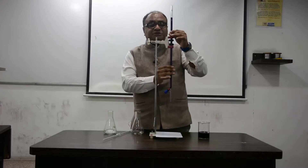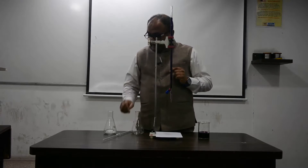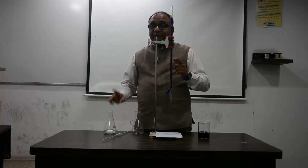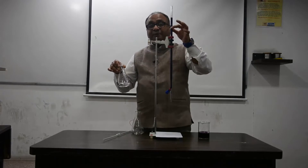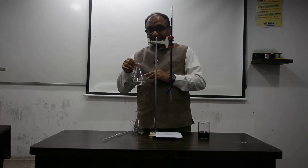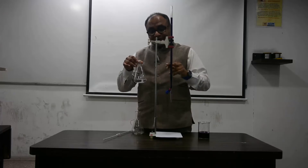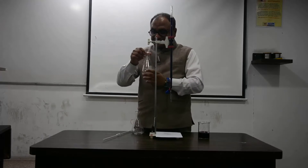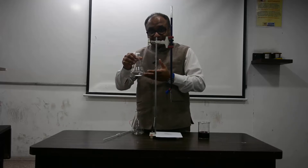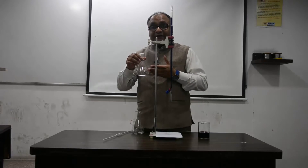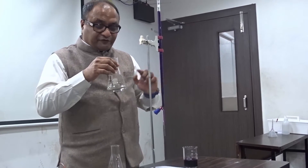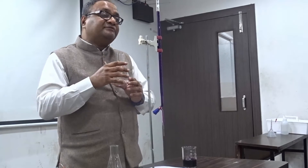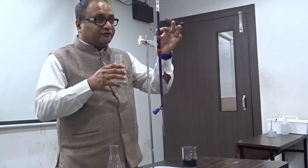I am going to do a simple titration between ferrous ammonium sulfate and KMnO4. The ferrous ammonium sulfate is colorless and KMnO4 is a deep purple. The product of KMnO4 and ferrous ammonium sulfate is colorless, so as long as ferrous ammonium sulfate is in excess the solution will appear colorless. Once the reaction is complete, adding one extra drop of KMnO4 will turn the solution pink — that is our endpoint — and we will note down the volume of KMnO4 added.